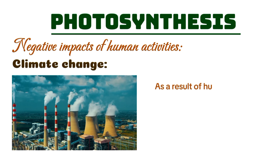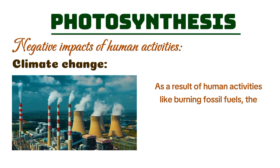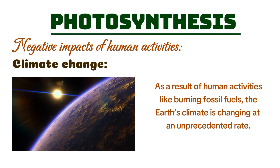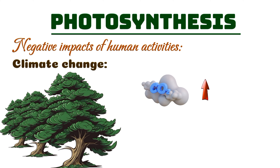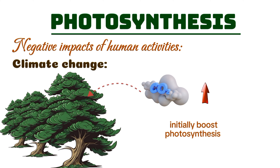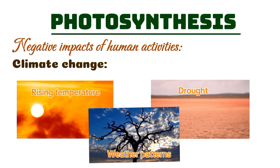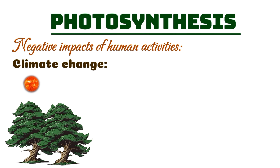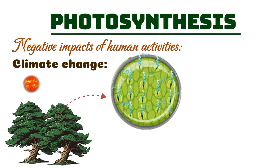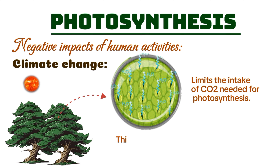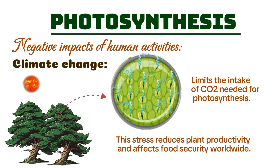As a result of human activities like burning fossil fuels, the Earth's climate is changing at an unprecedented rate. While increased carbon dioxide levels can initially boost photosynthesis — a process called the carbon fertilization effect — the long-term impacts of climate change are detrimental. Rising global temperatures, more frequent and severe droughts, and unpredictable weather patterns all stress plants. In extreme heat, plants close their stomata to conserve water, which limits the intake of carbon dioxide needed for photosynthesis. This stress reduces plant productivity and affects food security worldwide.